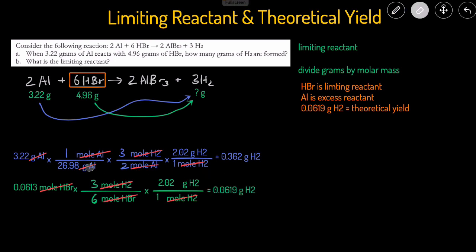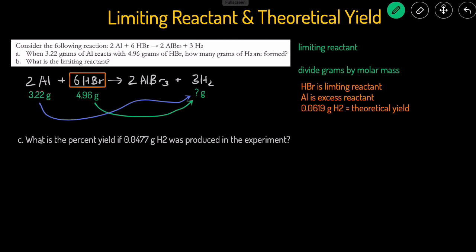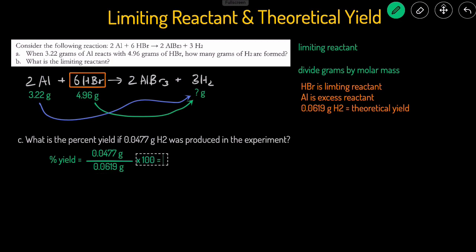Now let's add percent yield. If 0.0477 grams of H2 was actually produced in the experiment, the percent yield is calculated by dividing the actual yield by the theoretical yield and multiplying by 100. So: (0.0477 / 0.0619) × 100 = 77.1%. That means we got 77.1% of what we were supposed to get if the experiment went 100% according to plan.